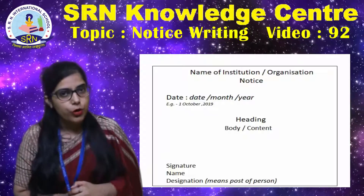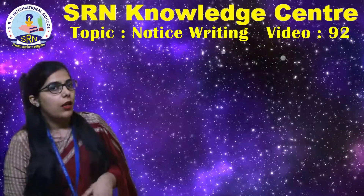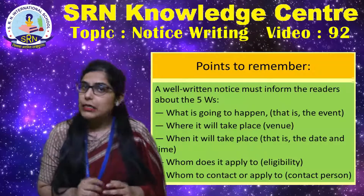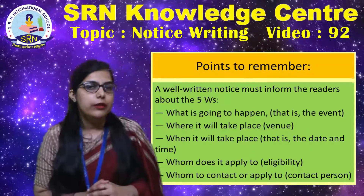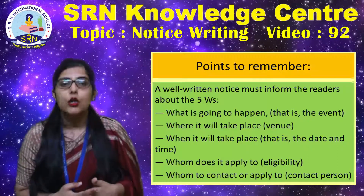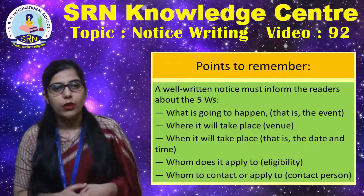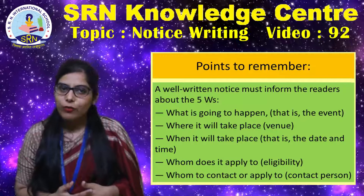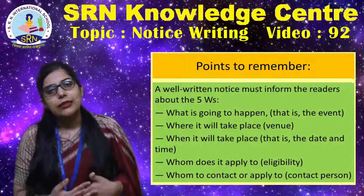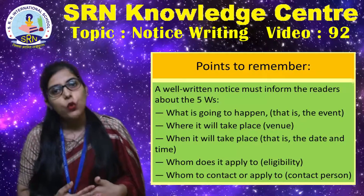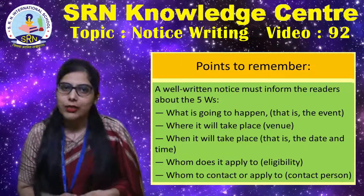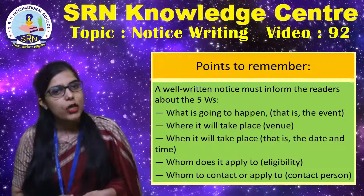There are certainly a few more points to remember while writing a notice. A well-written notice must inform the readers about five W's. It must contain all the necessary details such as: what is going to happen — that is the name of the event or activity; where it will take place — the venue of the event; when it will take place — the time and date; who can apply or is eligible for it; and whom to contact or apply to — that is the issuing authority.